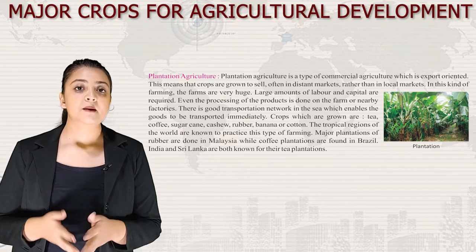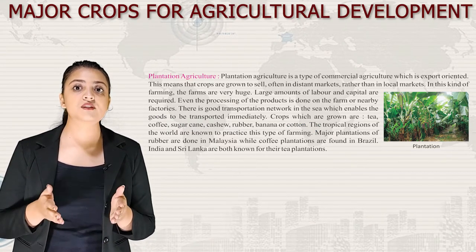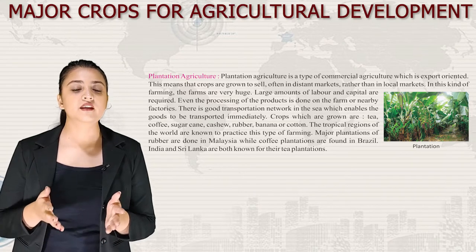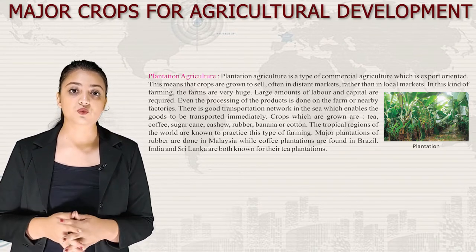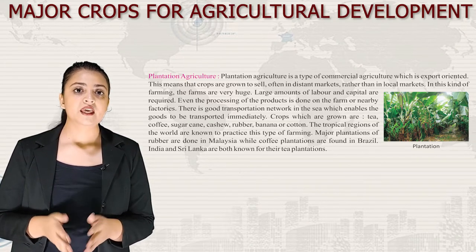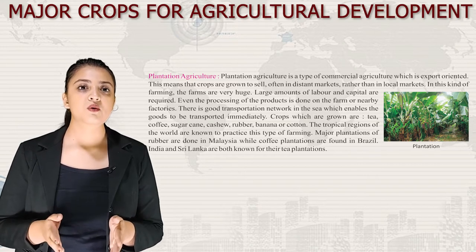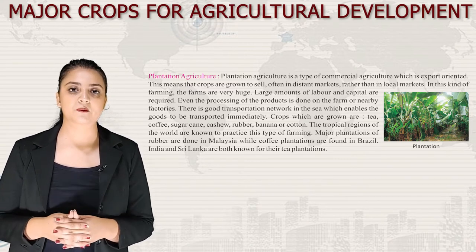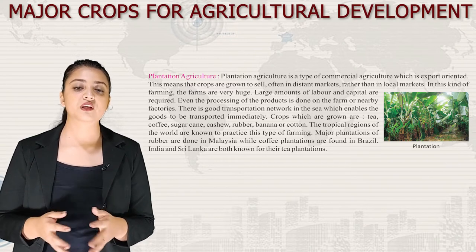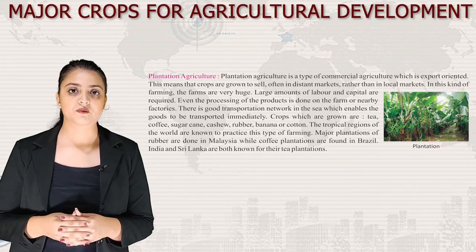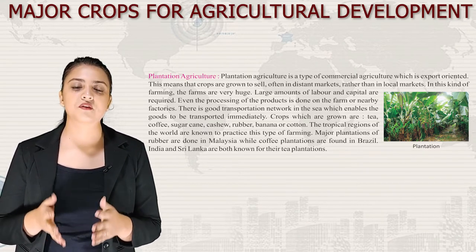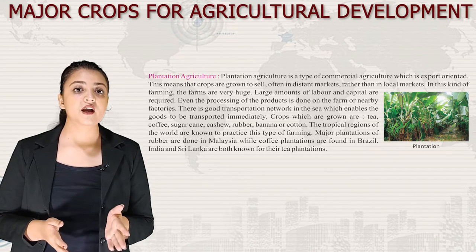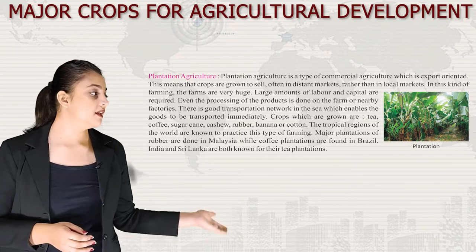Next we have plantation agriculture — a type of commercial agriculture which is export oriented, meaning crops are grown to sell in distant markets. Farms are very huge, requiring large amounts of labor and capital, and processing of the product is done on the farm or in nearby factories. Crops grown include tea, coffee, sugarcane, cashew, rubber, banana and cotton. Major rubber plantations are in Malaysia, coffee plantations in Brazil, and India and Sri Lanka are known for tea plantation.